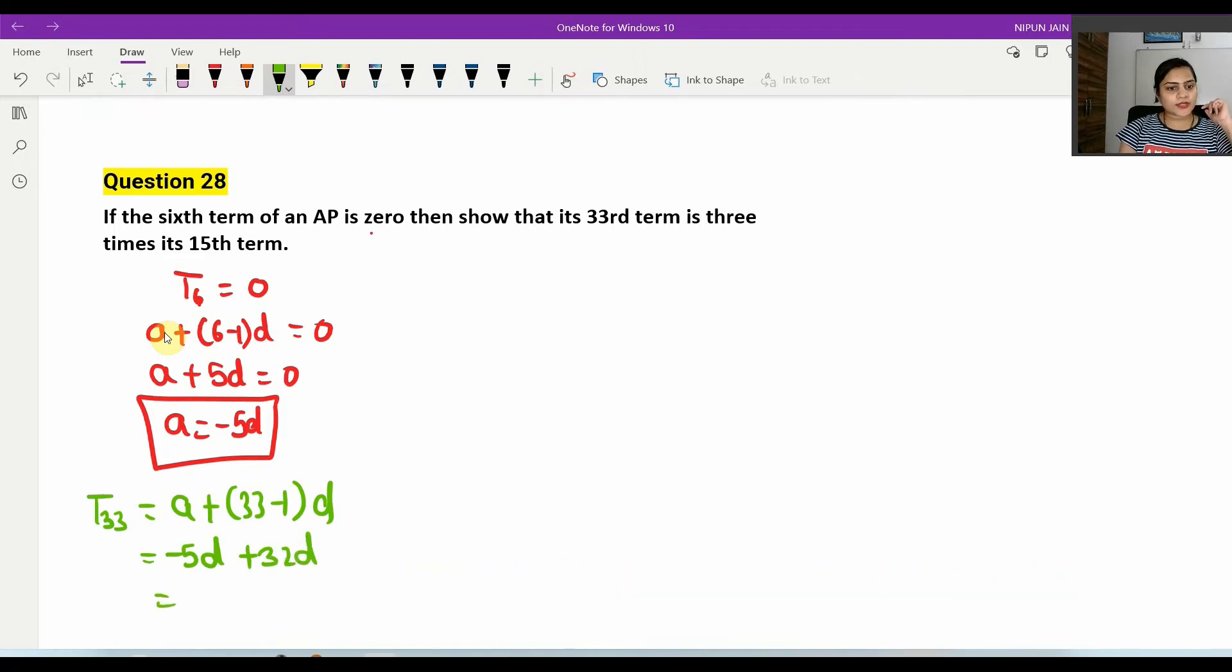Now we have to calculate T33. When we have minus 5D plus 32D, how much will it be? 27D. So T33 is 27D. Okay?